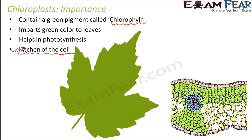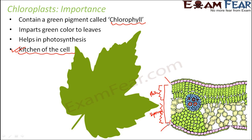Chloroplasts are present in the mesophyll layer. In the anatomy of a dicot leaf, this middle layer — bounded by the upper and lower epidermis — contains the mesophyll layer, which consists of the palisade parenchyma on the upper side and spongy parenchyma on the lower side. The chloroplasts are present in this mesophyll layer of the leaves.